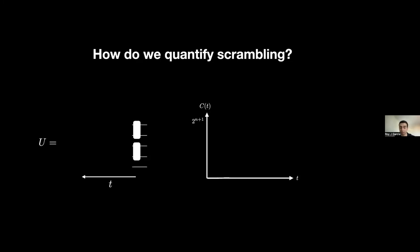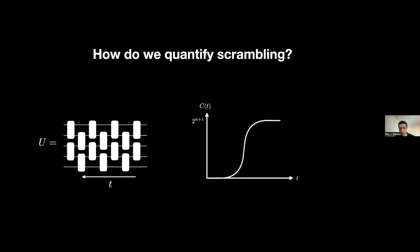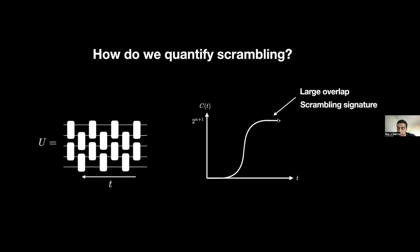Schematically, initially the commutator norm should be zero for some fixed amount of time — because it takes time for local information to propagate to the rest of the system. After that propagation happens, we should expect a spike in this commutator norm before it flattens out to some large fixed value. When we get this value, it's an indication that there's a large amount of overlap between our two operators, and typically this is considered to be a scrambling signature.